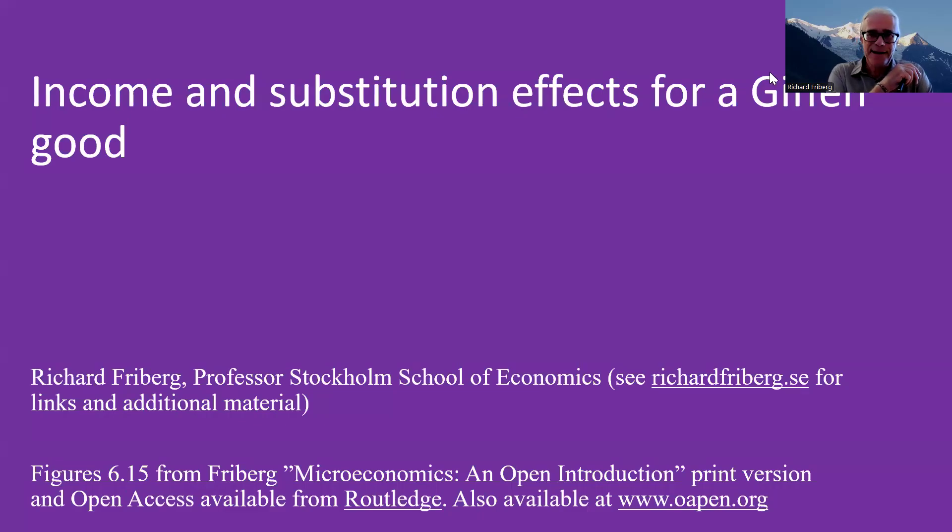Here we're going to be looking at the income and substitution effects for what's known as a Giffen good. A Giffen good is one where when the price increases, the consumer demands more of that product. So demand functions are upward sloping, which is kind of weird, right? Prices go up, you want more of it.